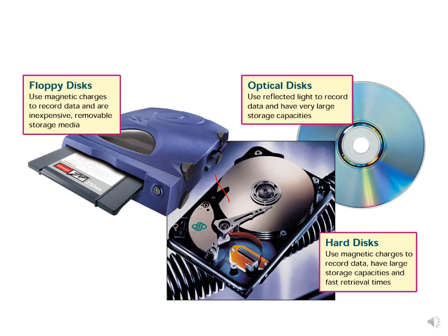Floppy disks use magnetic charges to record data and are inexpensive and removable. Nowadays floppy disks are never used, but these are their general properties. Optical disks use reflected light to record data and have very large storage capacity, like CD and DVD. Hard disks also use magnetic charges to record data and have large storage capacity with fast retrieval.